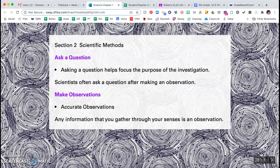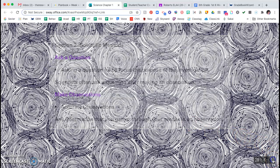So let's kind of review a little bit. You ask a question. Asking that question helps to focus the purpose of what you are studying, so the purpose of your investigation. Sometimes scientists ask a question after they make the observation. So these two steps are interchangeable. When you make an observation, this is anything that you gather through your senses. So ask a question and make an observation. You may make the observation and then ask the question or you may ask the question and then make the observation.